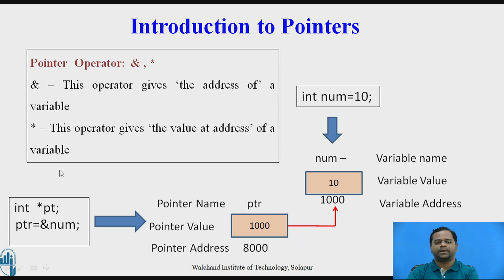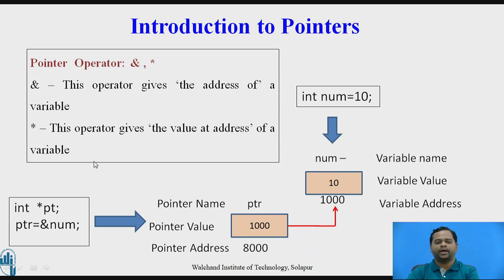Considering the previous example again: int star ptr, ptr = &num, and int num = 10. When I say &num it gives 1000 (the address). When I say num it gives 10 (the value). And when I say star ptr it gives the value at that particular address, which is 10.